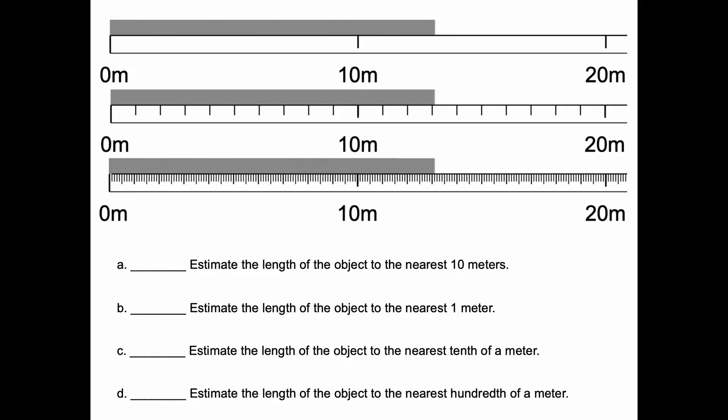Estimate the length of the object to the nearest 10 meters. The object here is a gray stick, and the left end of it is lined up with the zero of a ruler. Now in the top ruler, the instrument is only marked every 10 meters. And we want to say what the gray stick's length is closest to. Is it closer to zero, or 10, or 20?